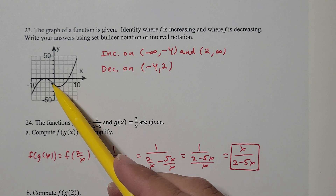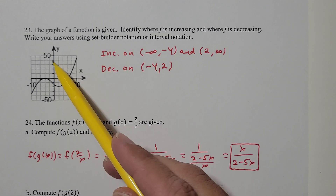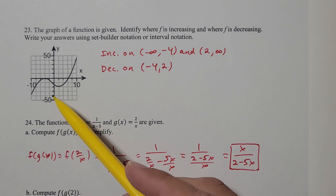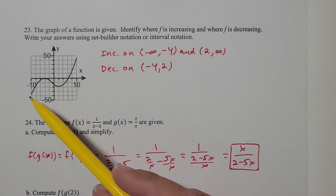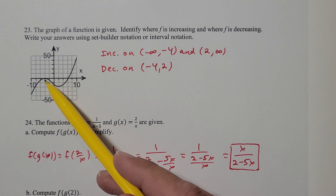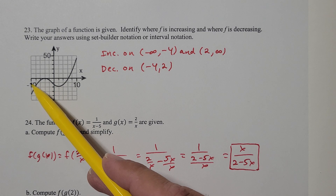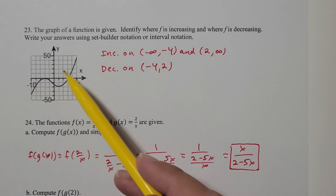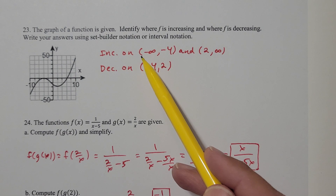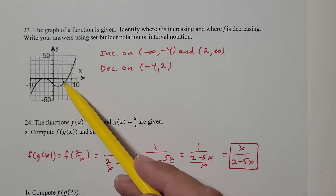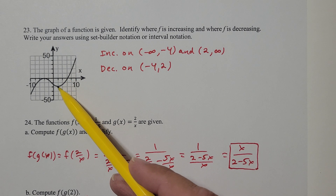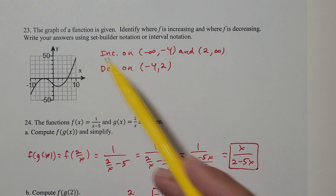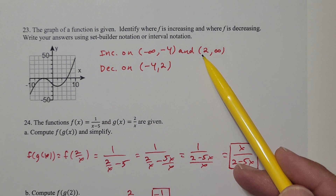The y-axis uses an increment of 10: 0, 10, 20, 30, 40, 50, and -10, -20, -40, -50. Scanning the graph from left to right, anywhere to the left of x = -4 the curve is rising, so f is increasing on (-∞, -4). And anywhere greater than x = 2 the curve is also rising, so f is also increasing on (2, ∞).